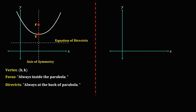For a parabola that opens upward, the formula is: x minus h, squared, equals positive 4p times y minus k. Since it opens upward and is on the positive y-axis, the 4p term is positive. This is the formula for a parabola that opens upward.